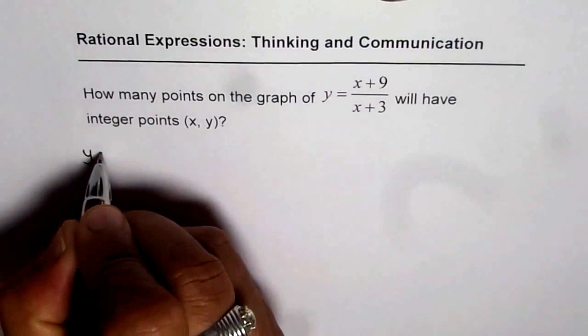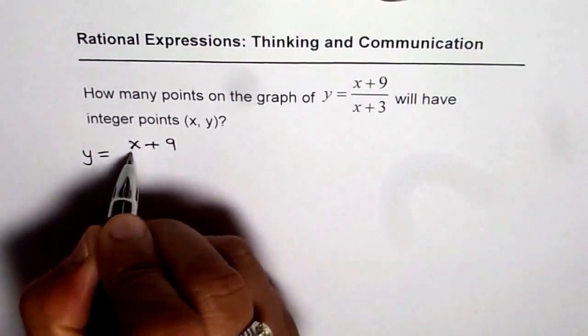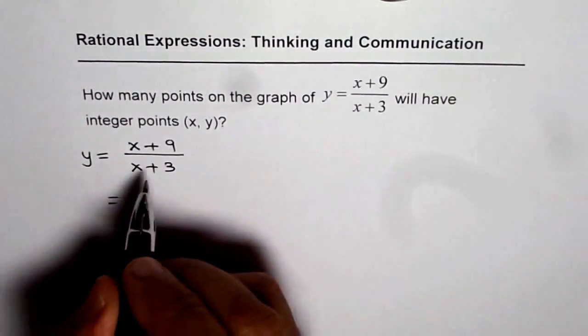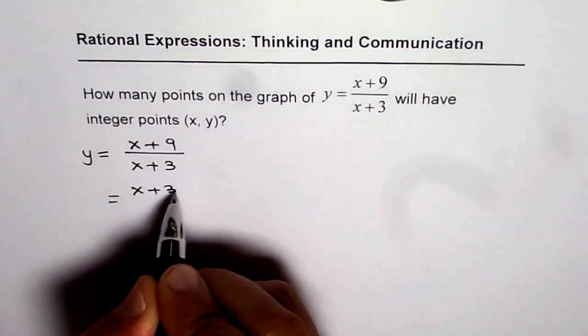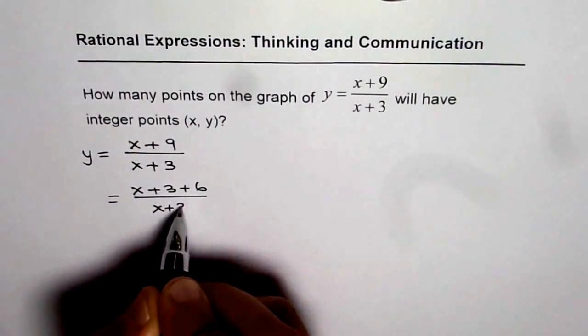We have rational expression which is y equals x plus 9 divided by x plus 3. Now, you could simplify this and write it as 9 could be written as 3 plus 6. That makes huge difference. See how.